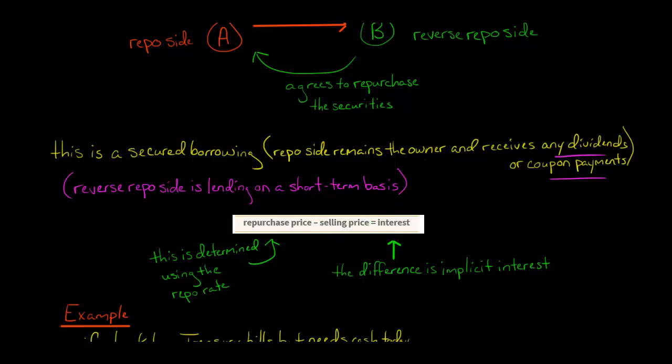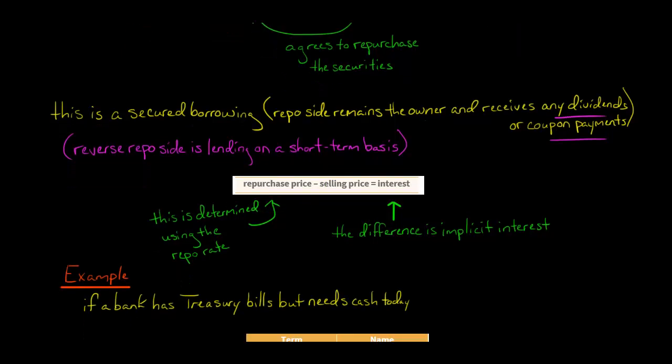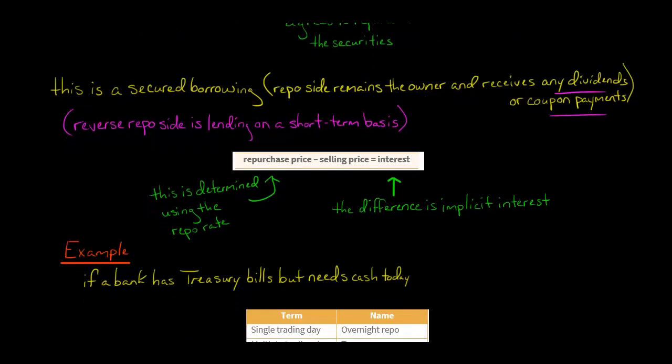The reverse repo side is not doing this as a favor. They're saying: we'll buy these securities and then sell them right back to you, but when we sell them back to you, that price is going to be higher than what we paid. And that's the implicit interest.